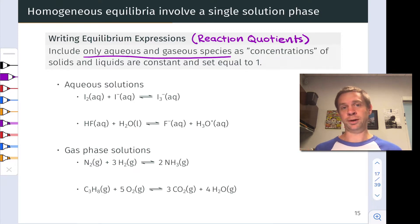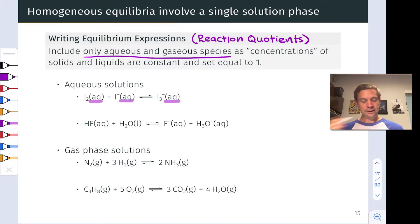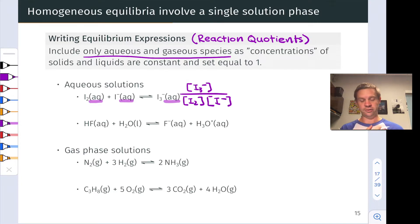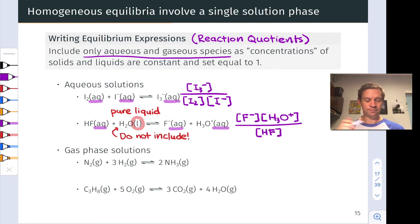Generally, for homogeneous equilibria, because everything is in the same phase, we include all the reactants and all the products in the equilibrium expression or reaction quotient — with one exception. This first example is exactly what we're used to: products in the numerator, reactant concentrations in the denominator. In the second example, we have both products F⁻ and H₃O⁺ in the numerator, but only HF in the denominator, because water — which is a reactant — is a pure liquid, and so we do not include it in the reaction quotient, treating it as essentially multiplying by one.